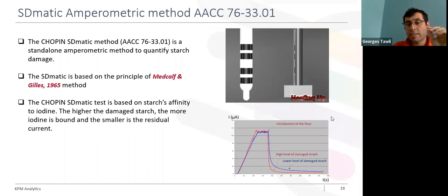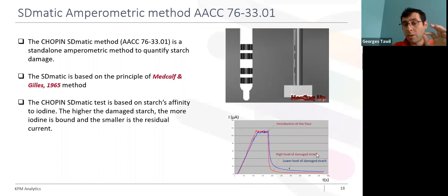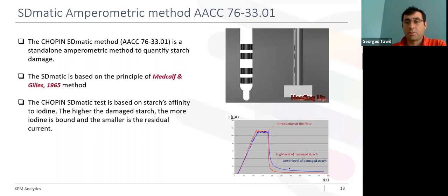On this chart, I am showing two curves for two different flours. The red curve has a relatively higher level of damaged starch because the residual current is low. Compared to the blue one, this flour contains a relatively lower level of damaged starch.